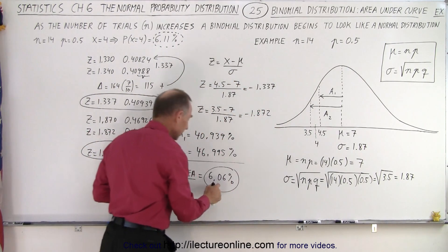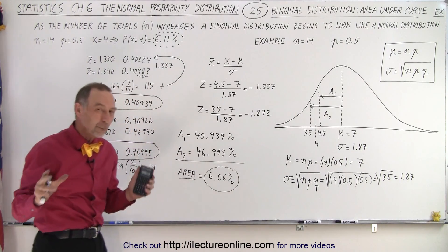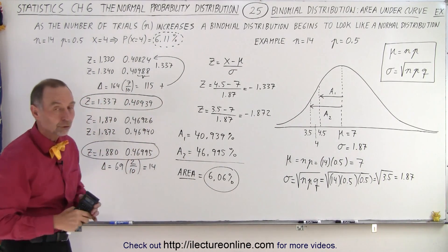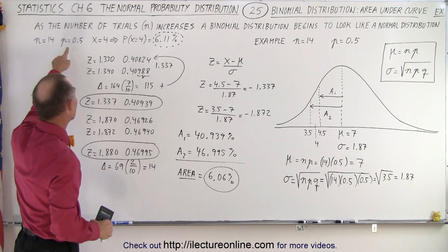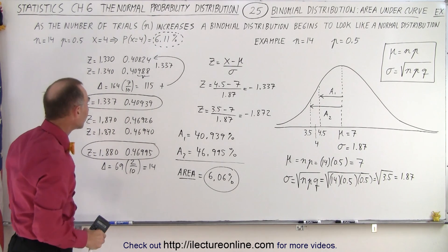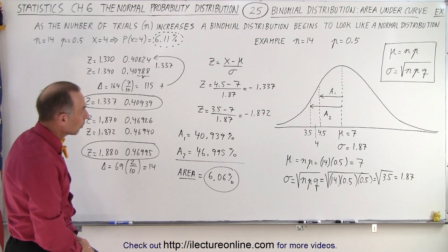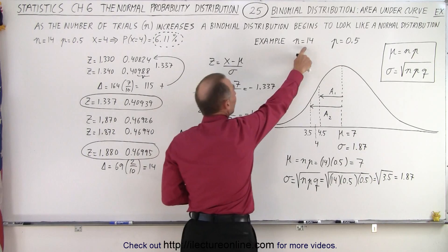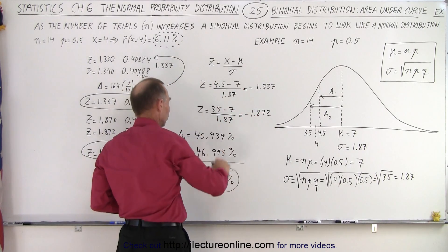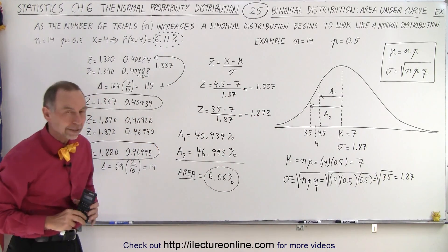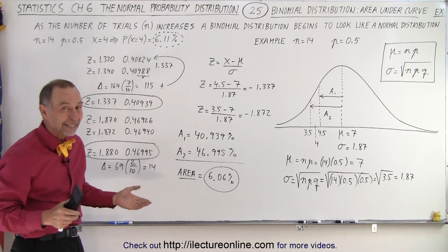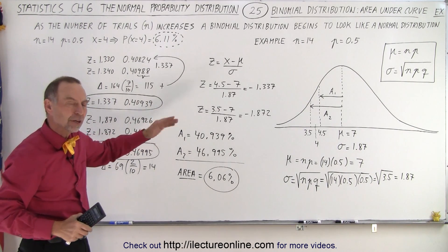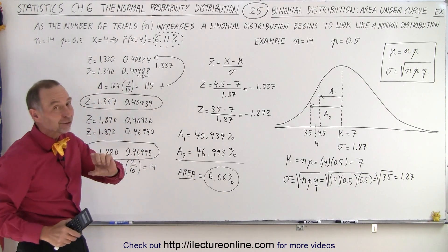So you can see that it seems to work quite well, and as the number of trials increases the numbers will get closer and closer and closer together. So it's a good method and it's actually a faster method as n becomes very large. It's not as fast as n is small because then it's probably easier just to use binomial distribution method.